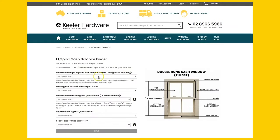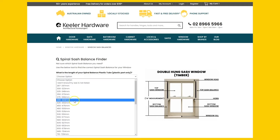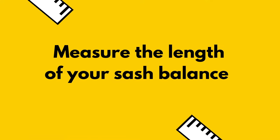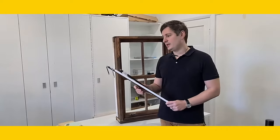I will show you how to find the right size sash balance using our very simple tool. The first thing to do is, if you do have an existing sash balance, the quickest way to determine the size of your sash balance is by removing one from your window